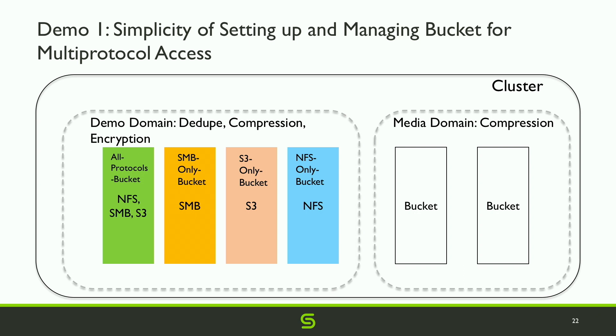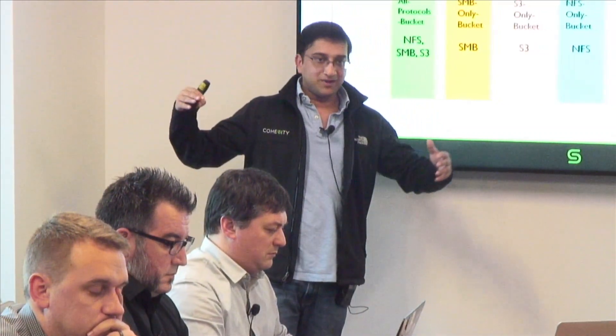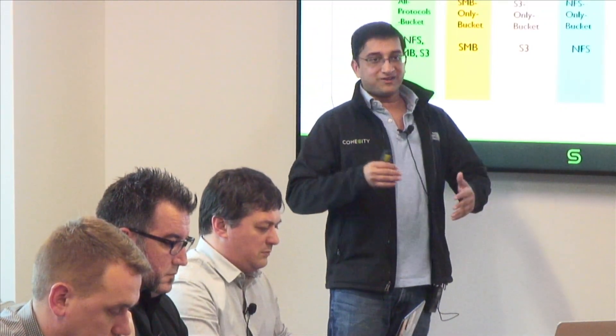I'll show how easy it is to create a bucket for multi-protocol access in the QoCity UI. You can create a bucket that is NFS read-write and SMB read-write simultaneously, while being S3 read-only. If you want S3 write access, you can clone that bucket using our instant clone facility to get a writable copy. We don't allow concurrent writes via NFS and S3 because NFS is a file-style protocol while S3 is a key-value store — they don't work well together.